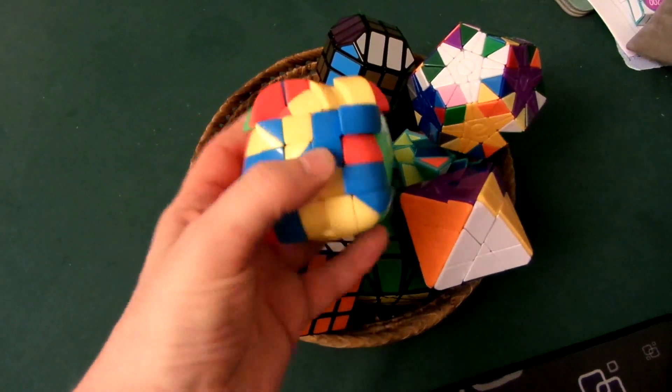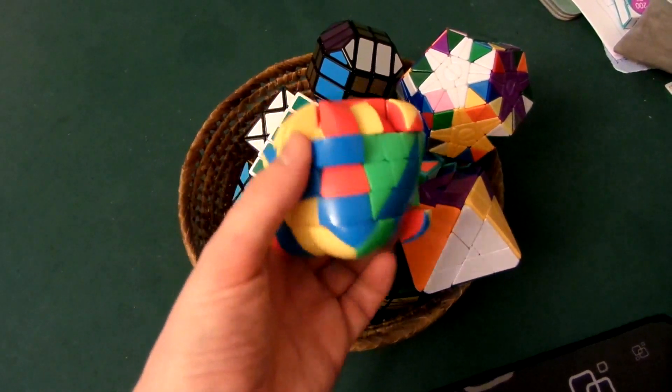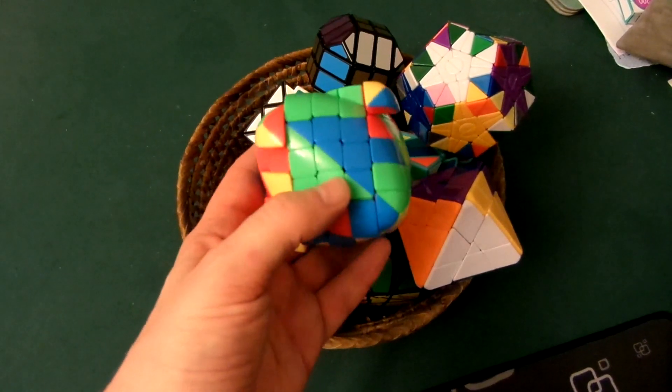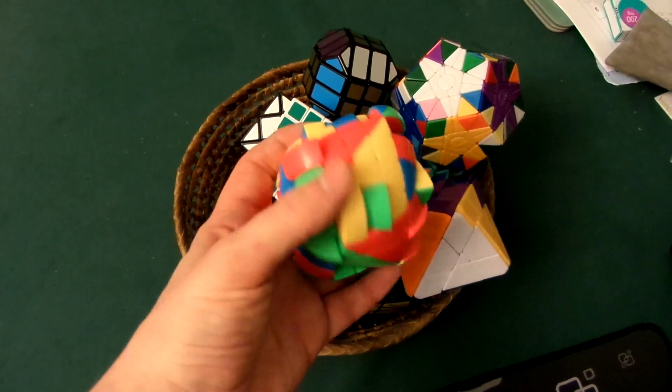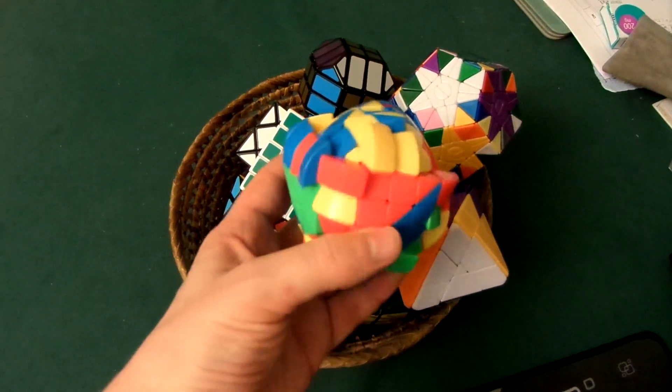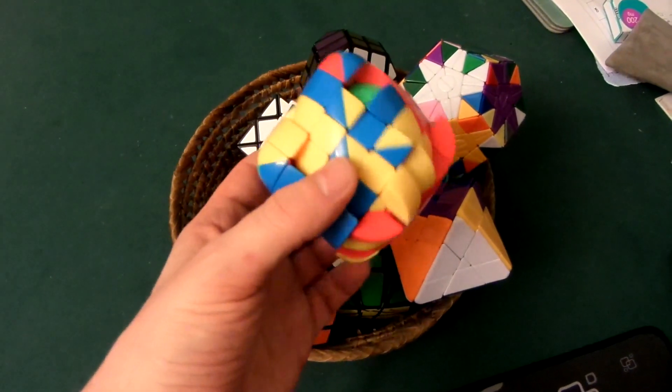I did try to solve the Shang Shao Ultra Morphix, which is a 5x5 shape mod. You can see I've already started solving the centers, but I ended up getting stuck on the last center and I thought, you know something...